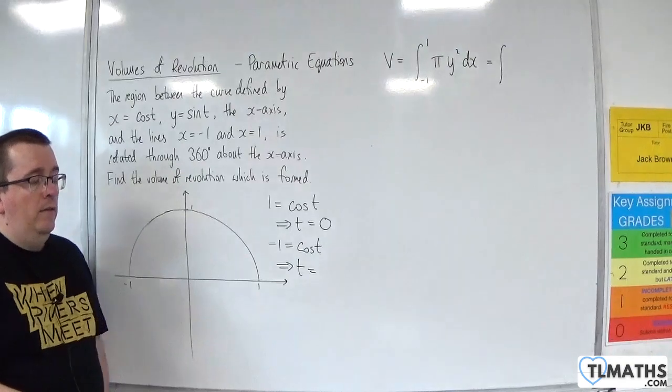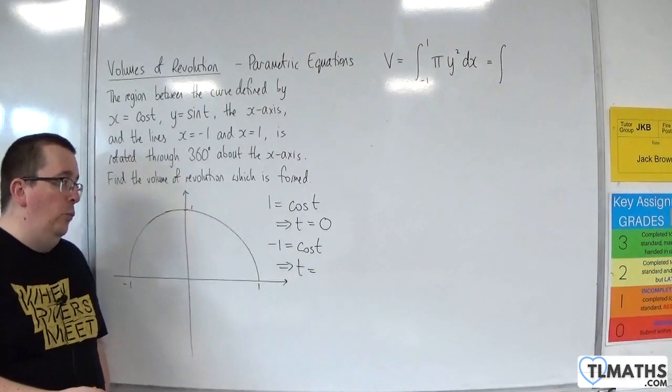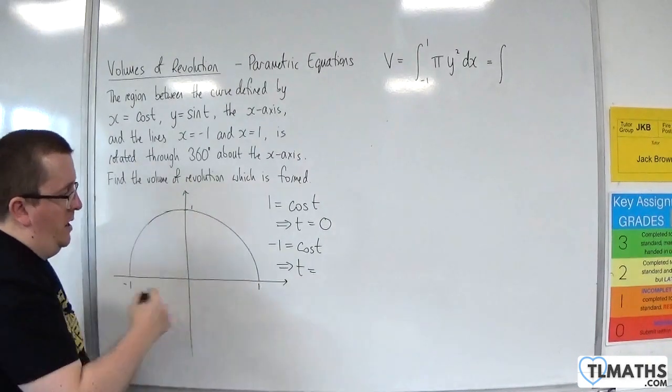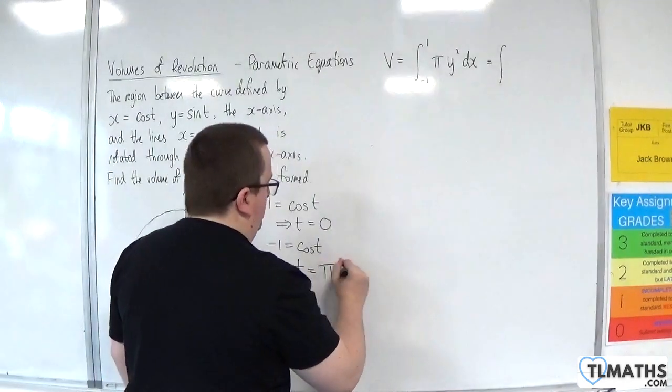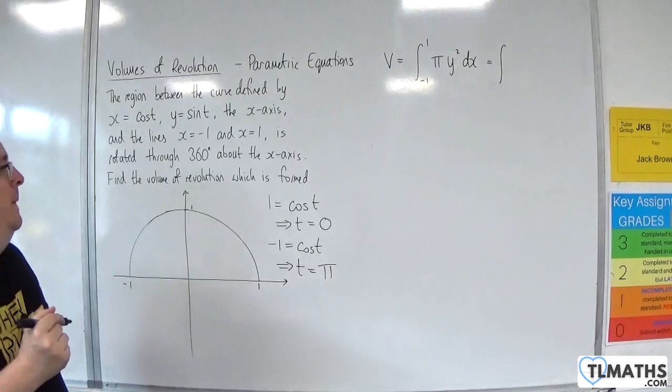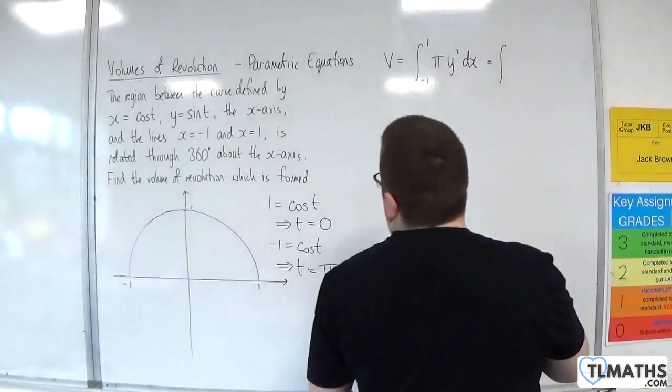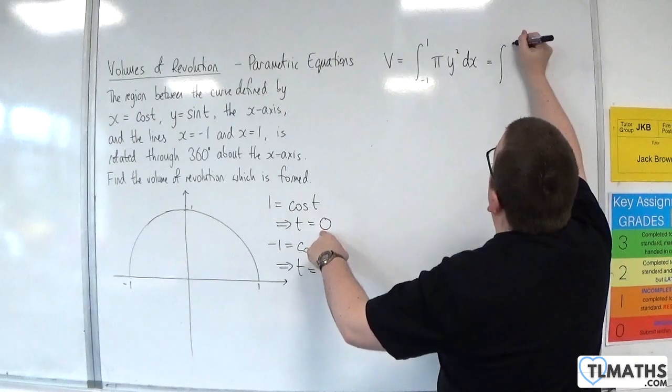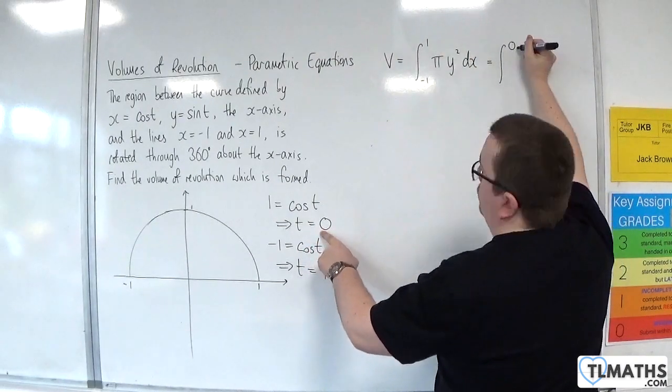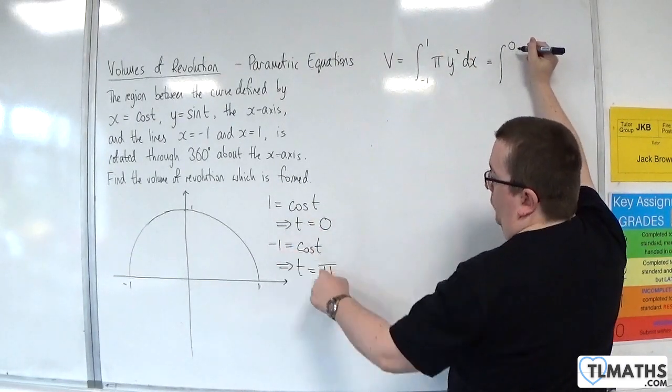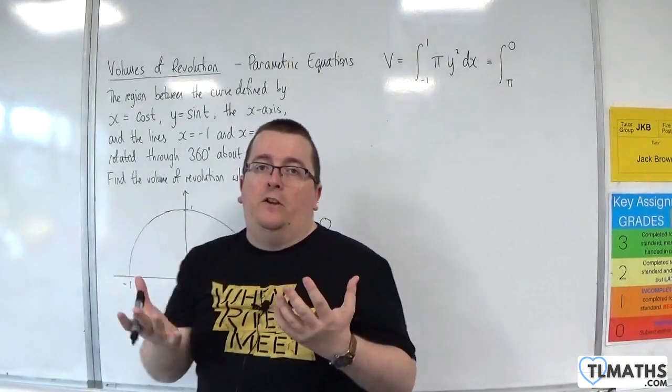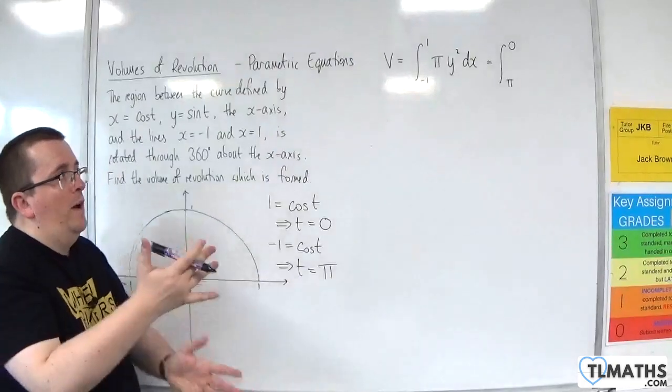And then when cosine of t is minus 1, then we'll be at pi. So make sure we're working radians here. Now, the thing about this is that the x value of 1 will go with 0. So we're going to have to replace the 1 with 0, and we're going to have to replace the minus 1 with pi. Now, of course, this creates a little bit of an oddity because you've got the limits the wrong way round, not the correct way round to how you would expect them to be.